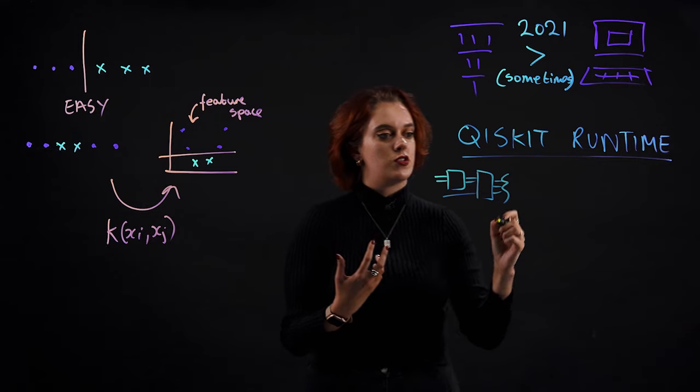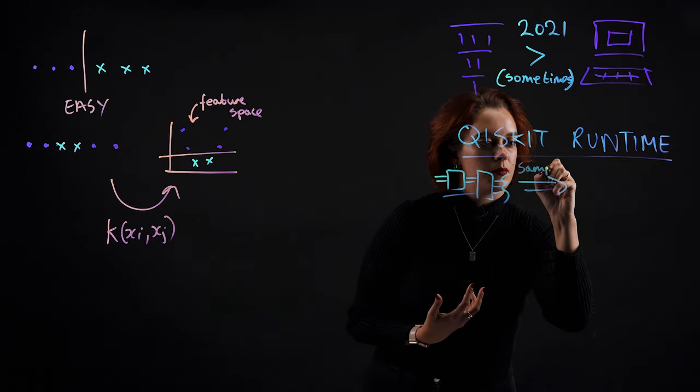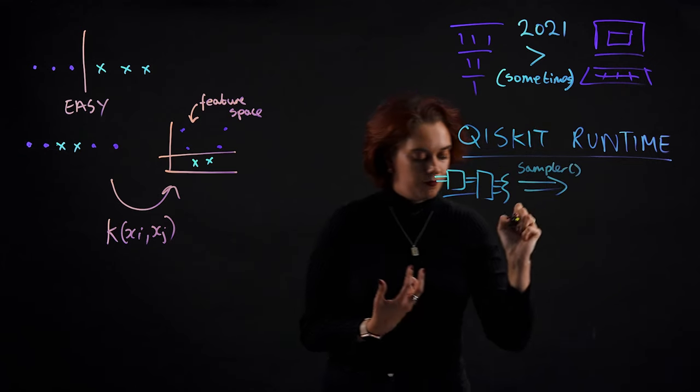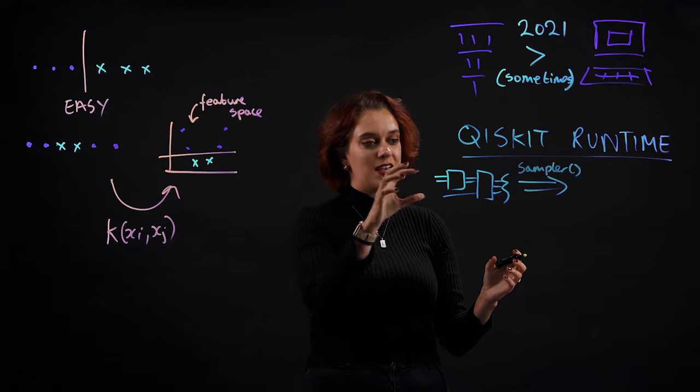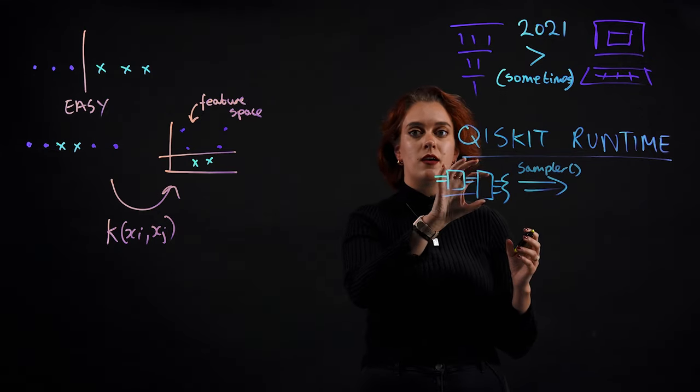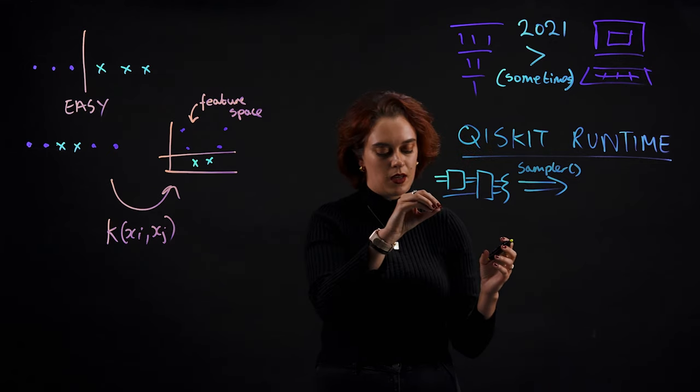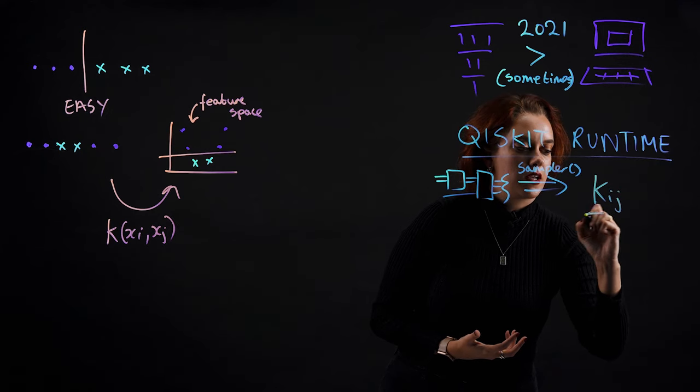We can then use the sampler primitive to obtain quasi-probabilities indicating the relationships between the different data points. And these relationships can constitute our kernel matrix.